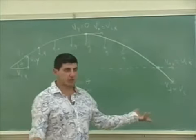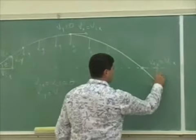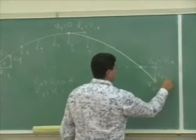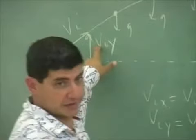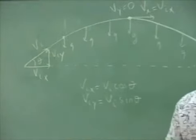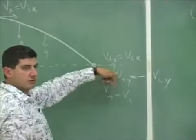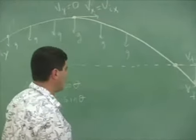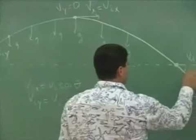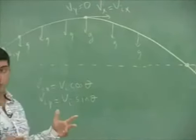The final velocity in the y direction equals the negative of the initial y component — meaning it has the same magnitude but points downward. Therefore the angle is the same: the object leaves at angle theta and returns at angle theta below the horizontal.